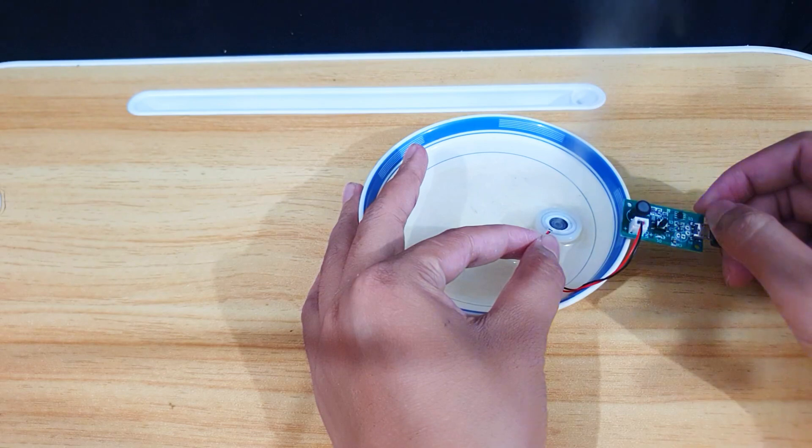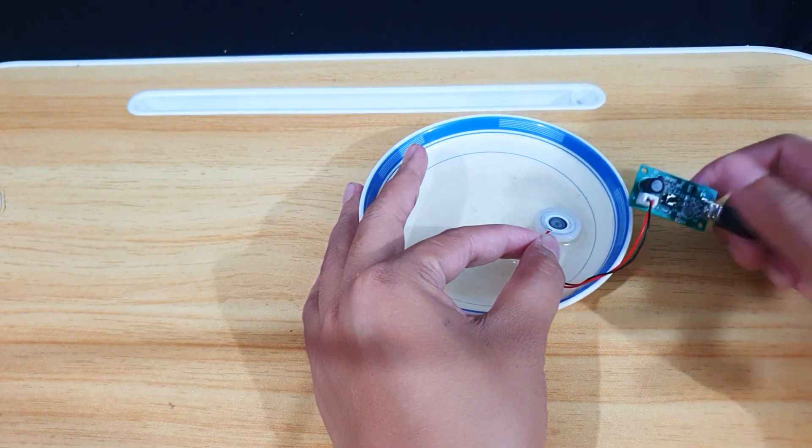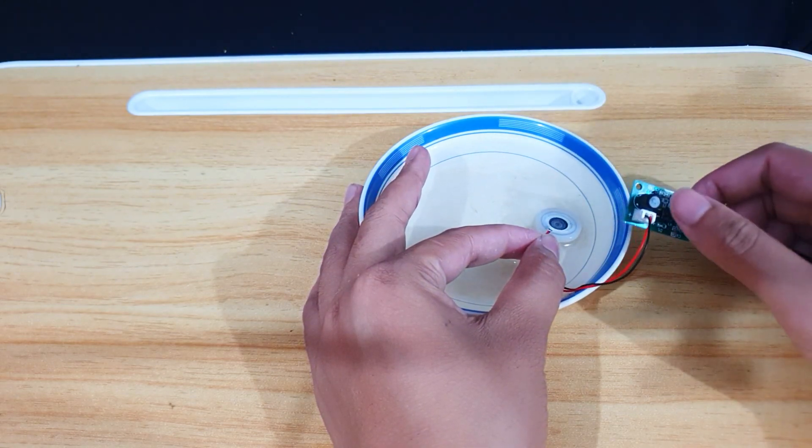And if I press the button once more, the module shuts off completely, stopping the mist production.